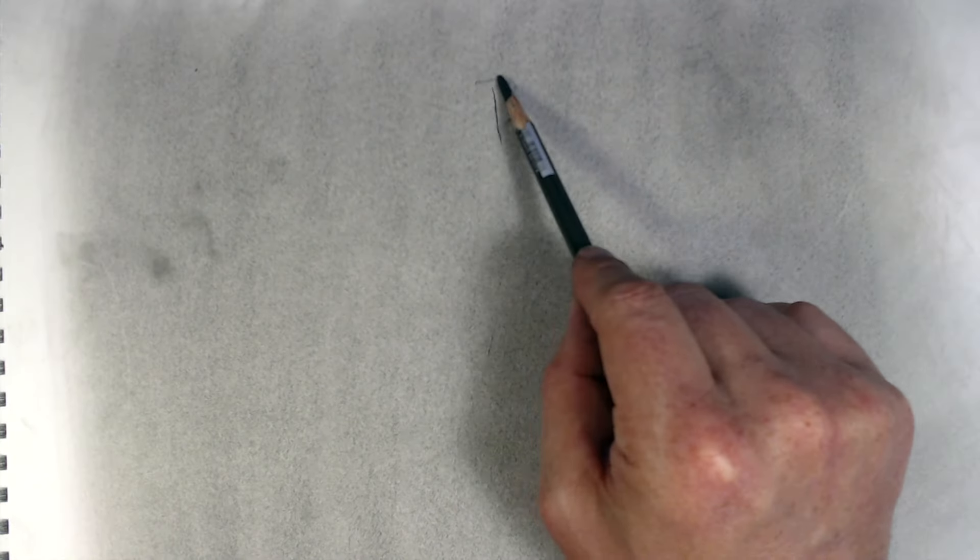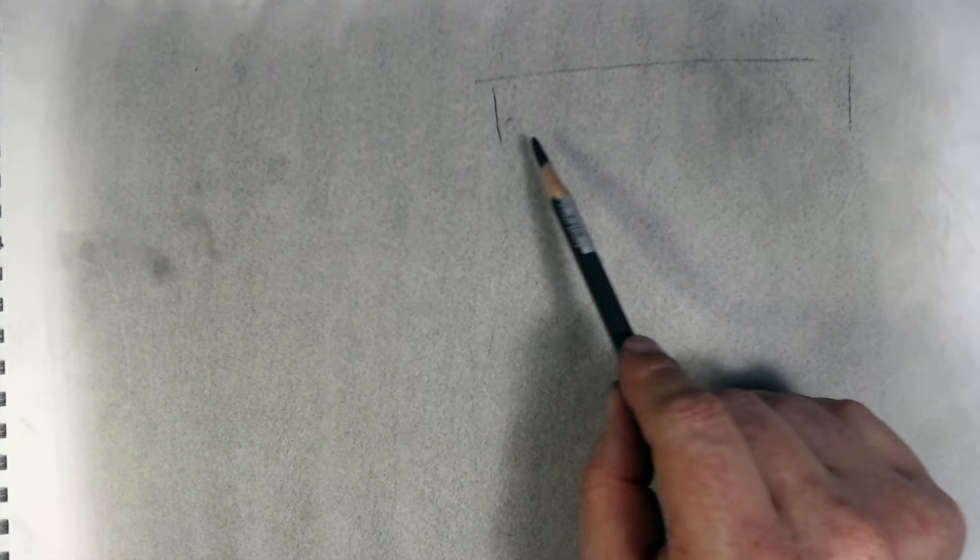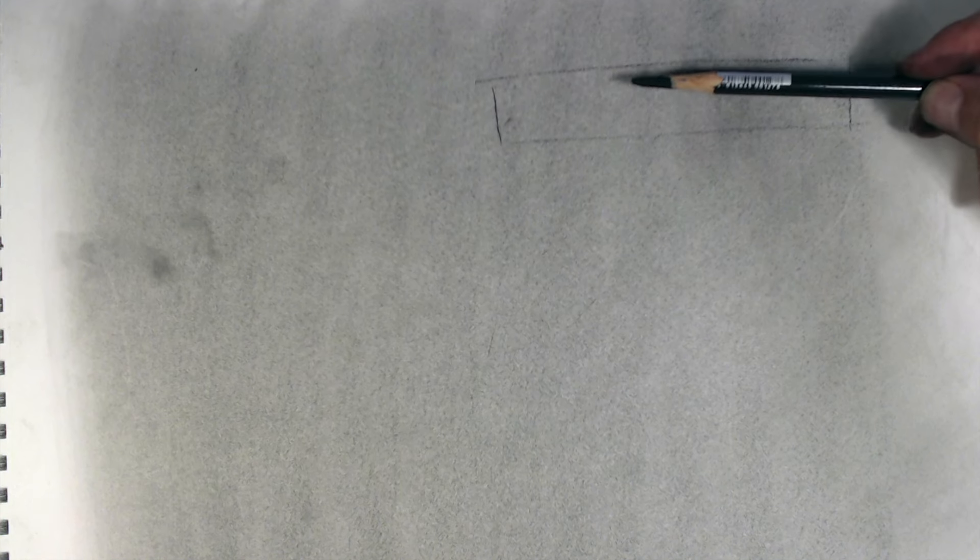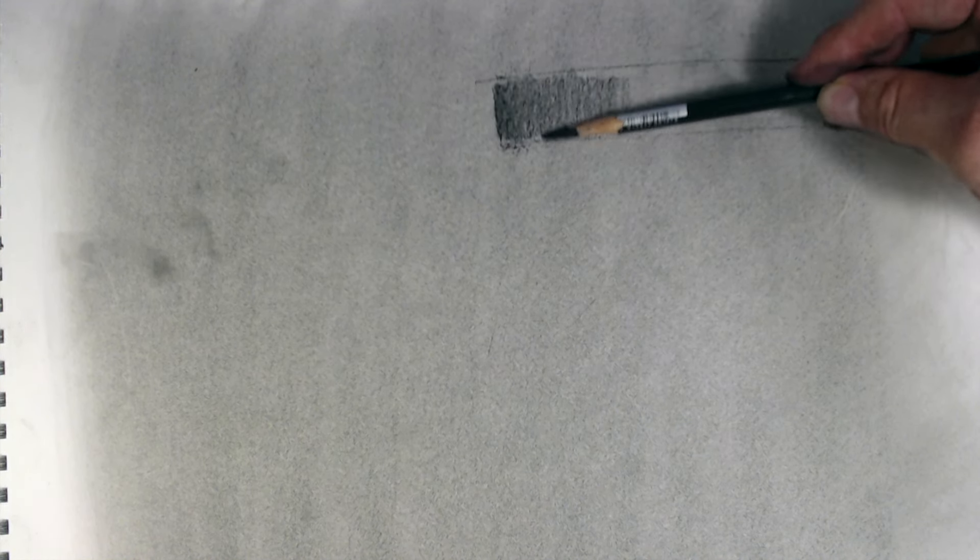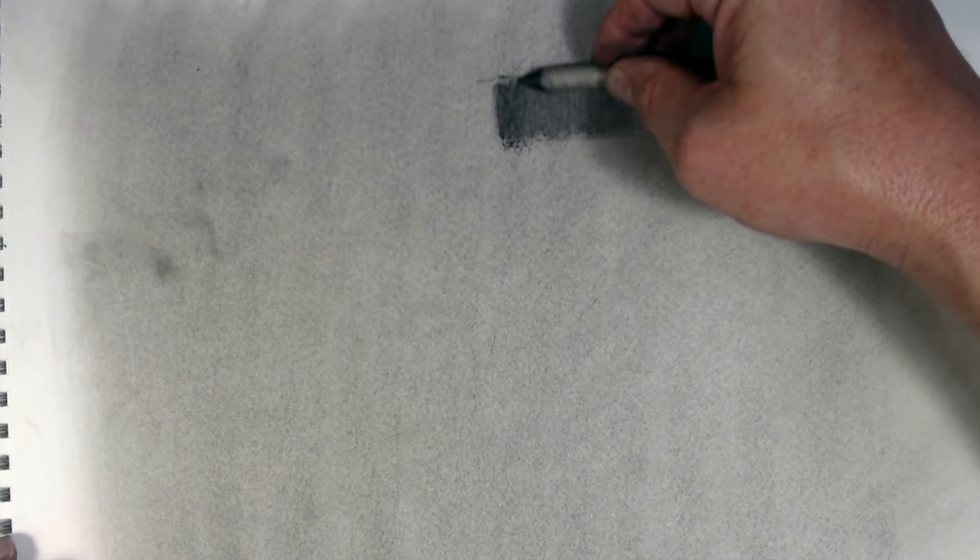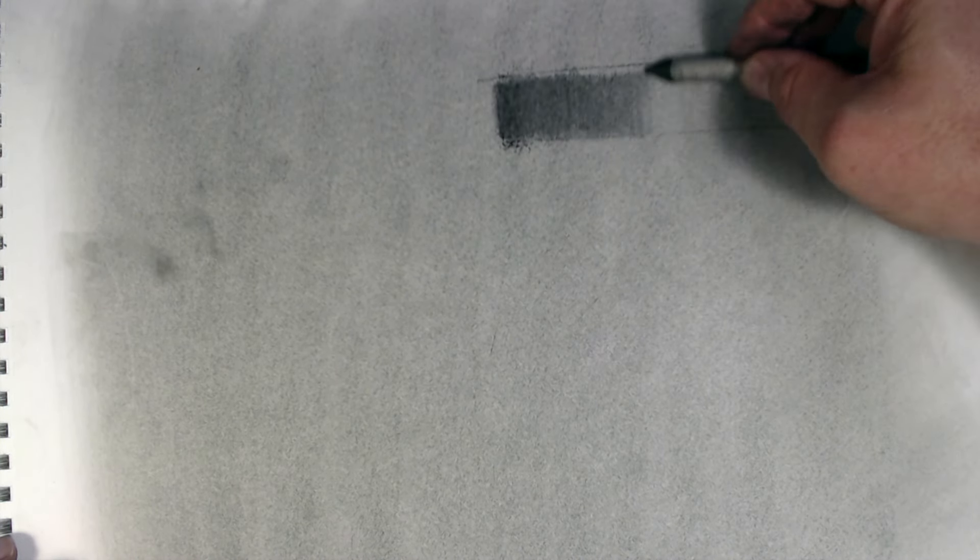Here is how this technique works. Let's say I'm doing a simple value scale, where the paper represents the mid-tone, the 50% gray. To go darker, I'm going to use my charcoal pencil. And then I can use my blending stump to blend it down if I want. Like so.